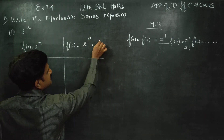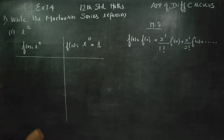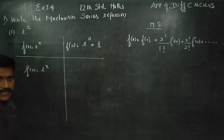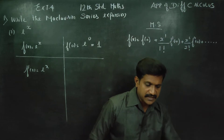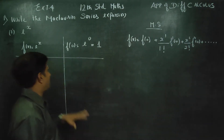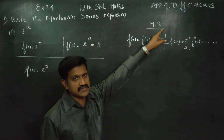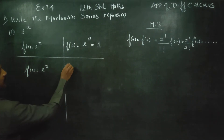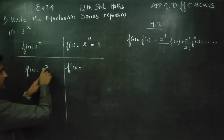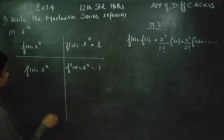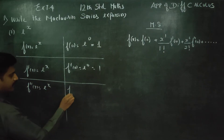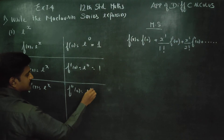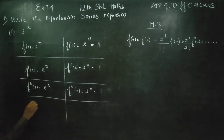e power 0 is 1. After this, I want f dash x. f dash x — this is e power x. Differentiate e power x — successive differentiation. e power x differentiated is e power x. So f dash 0 is equal to e power 0, which is again 1. e power x — it's a very simple function. That's it.